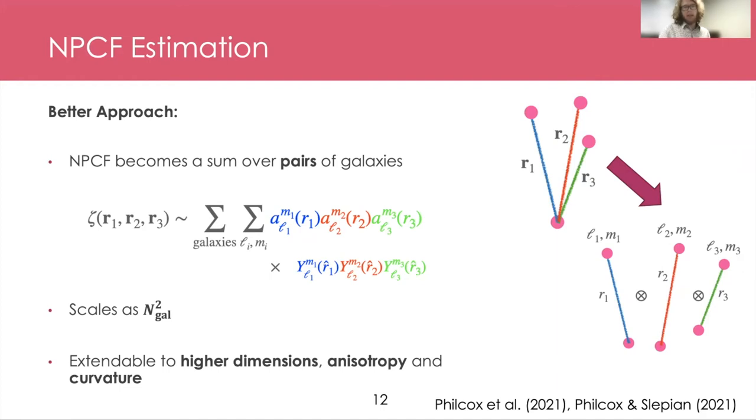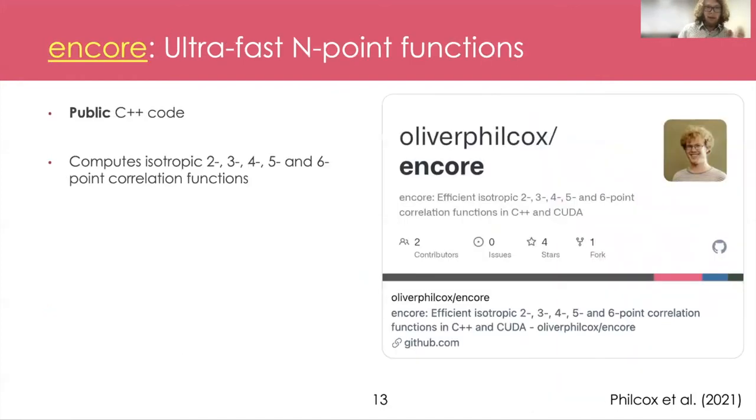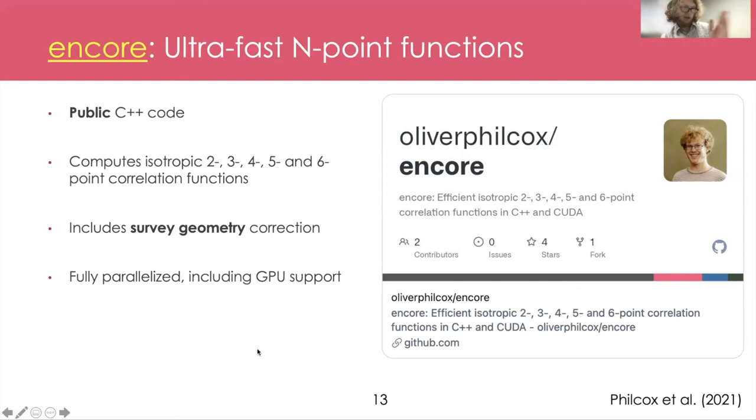We have a code which can do exactly this. So this is called the Encore code. It's now public, we found on GitHub. And this computes the isotropic two through six point correlation functions very efficiently, using all the tricks we just talked about, plus a lot of code written in C++. And another nice feature about it is it also accounts for the effects of survey geometry on all their N-point functions. All the galaxy correlation functions are measured with some very anisotropic window function, some set of holes in it. We can actually remove the effects of this window function as it's described in some of the papers. So the code is fully parallelized. We can run on any kind of OpenMP system. And it also includes GPU support, which is currently being developed, especially by Craig Warner down in Florida.